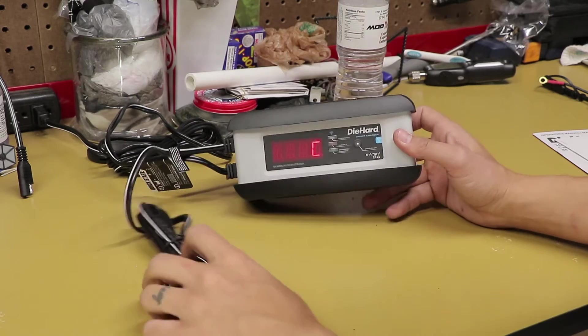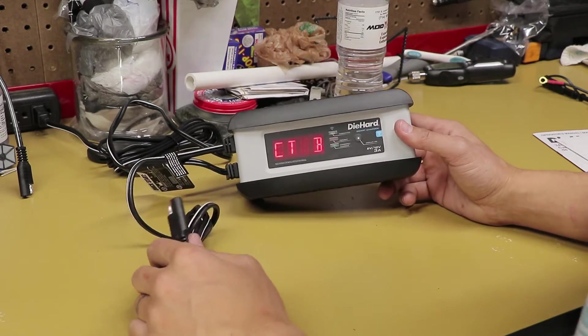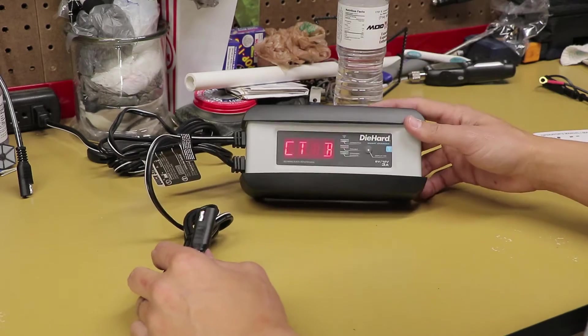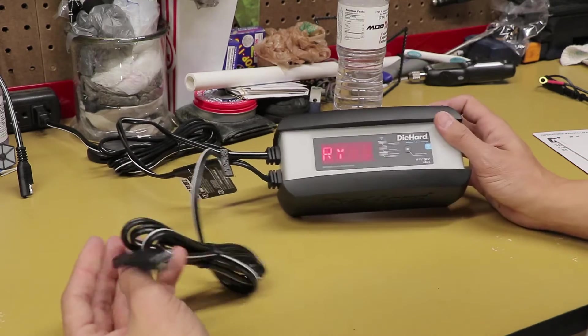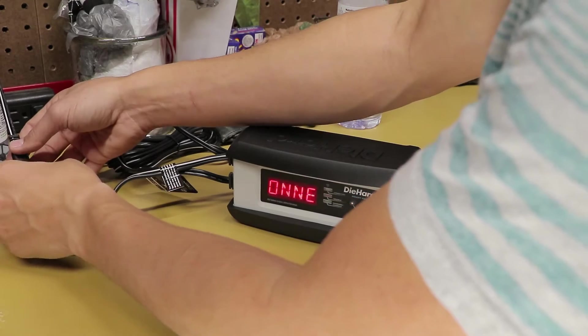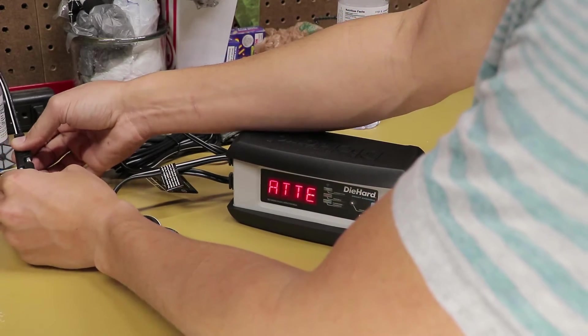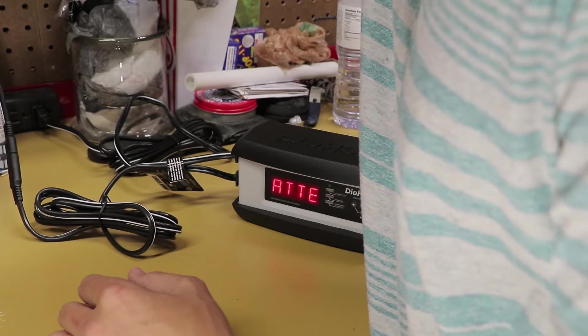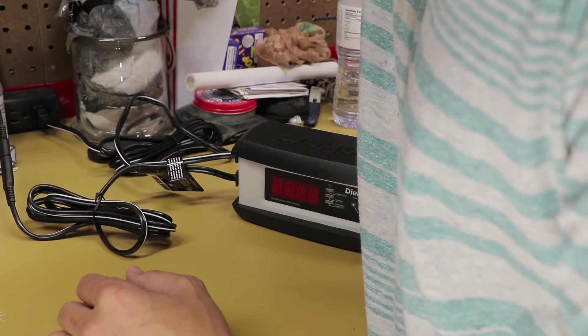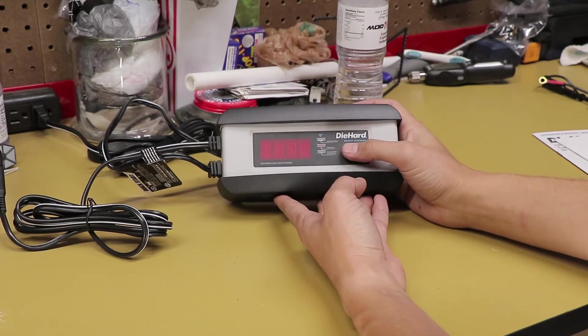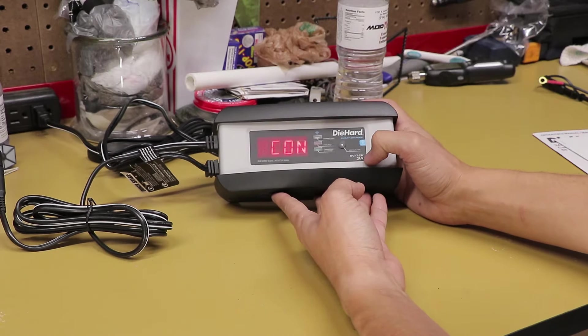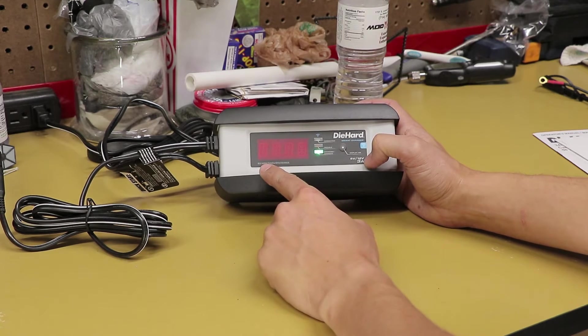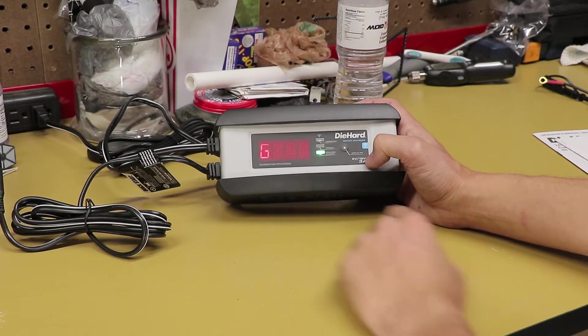So now we've got the unit plugged in here, and as soon as you do, it'll say connect battery on the display. So I've got a 6-volt battery here that has sat around for a while, so let's see what happens when we get that plugged in. So now that that's plugged in, it shows that the battery is connected now and that the battery is charging.